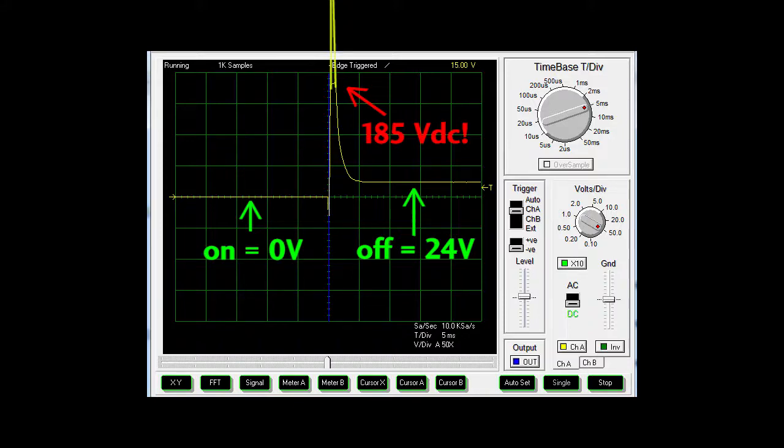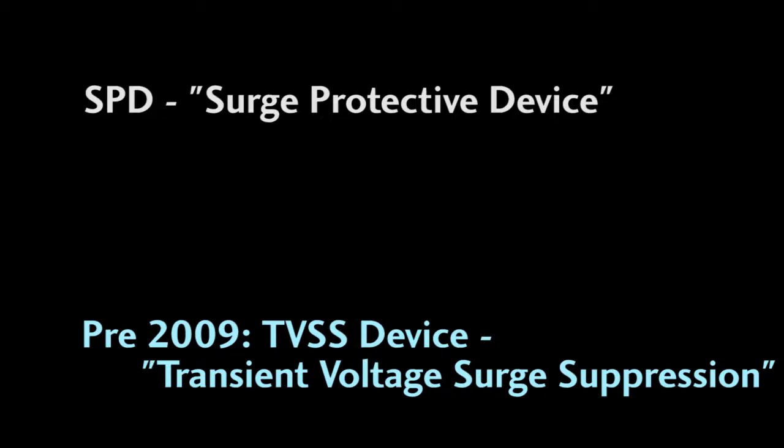So how do you get rid of that voltage spike or surge as it's properly called? With an SPD, a surge protective device. By the way, before 2009 these were called a TVSS device or transient voltage surge suppression device. That term isn't considered proper anymore, but you will still see it used.